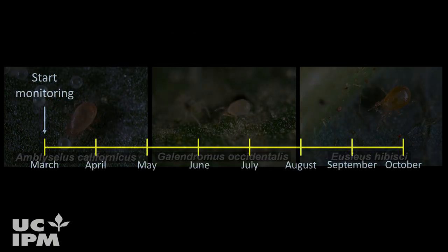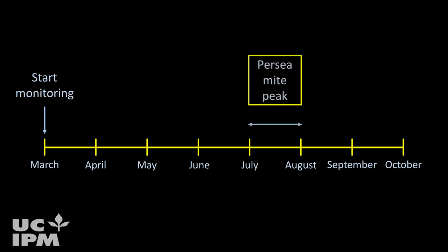Start monitoring for mites in mid-March and monitor every few weeks through at least August. Persea mites usually reach their highest numbers in July or August, but in some cases they don't decline until October.